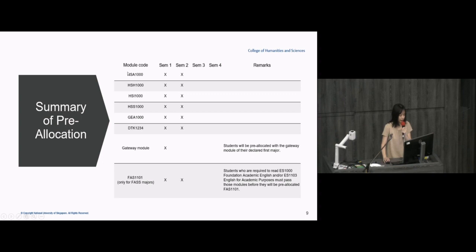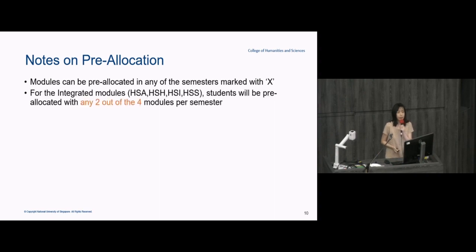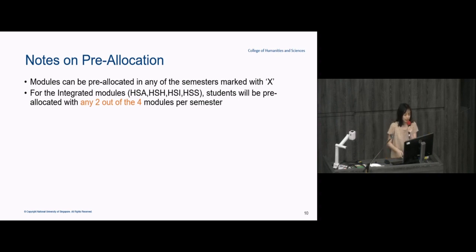All pre-allocation happens in the first two semesters. For the four integrated modules, in your first semester you're going to get two integrated modules, and in your second semester you're going to get the remaining two. This is done on a random basis.